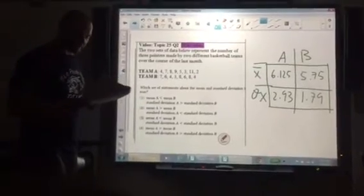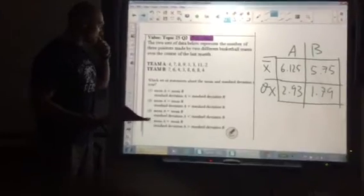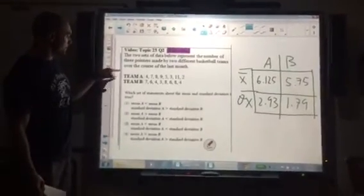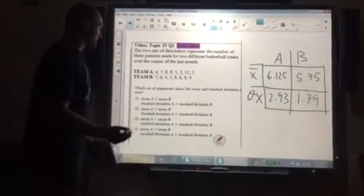In Topic 25, Question 2, we have two data sets. This measures three pointers made by two different basketball teams. We have Team A and Team B. So we're going to have to do one variable statistics twice.